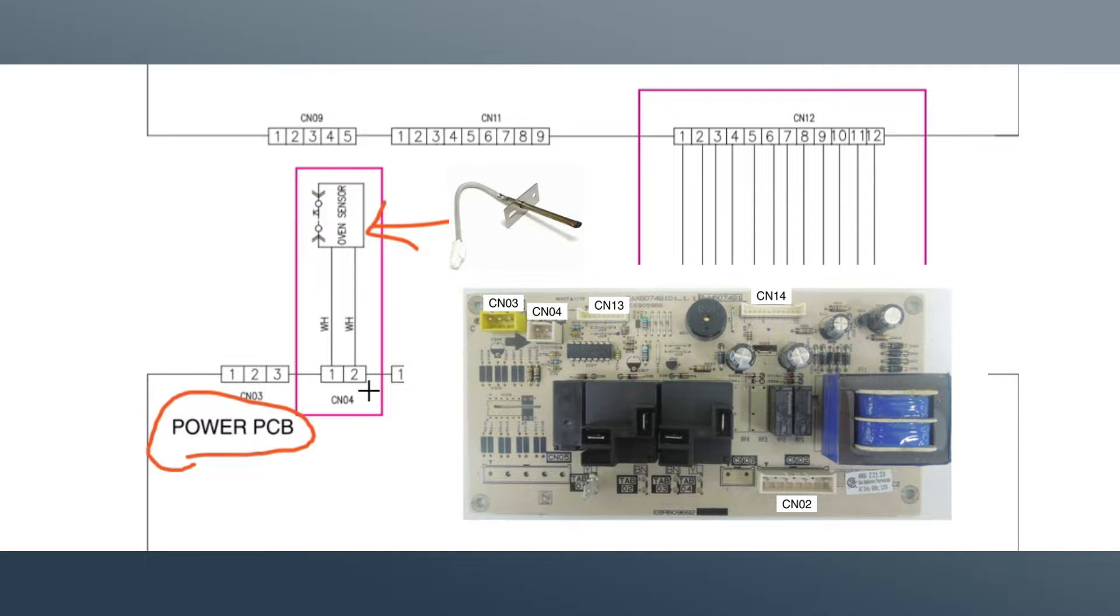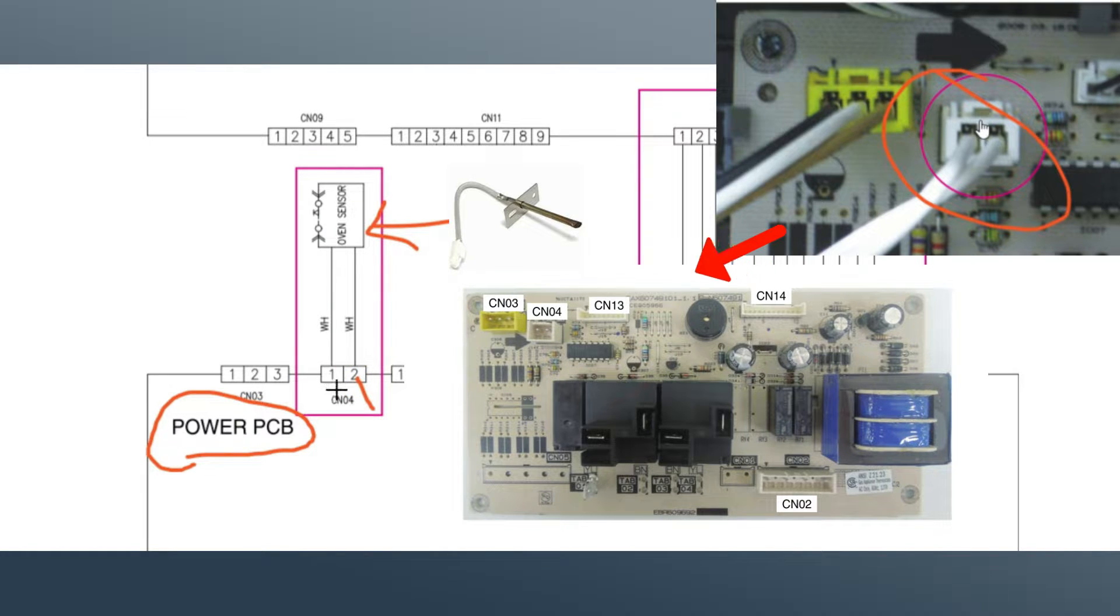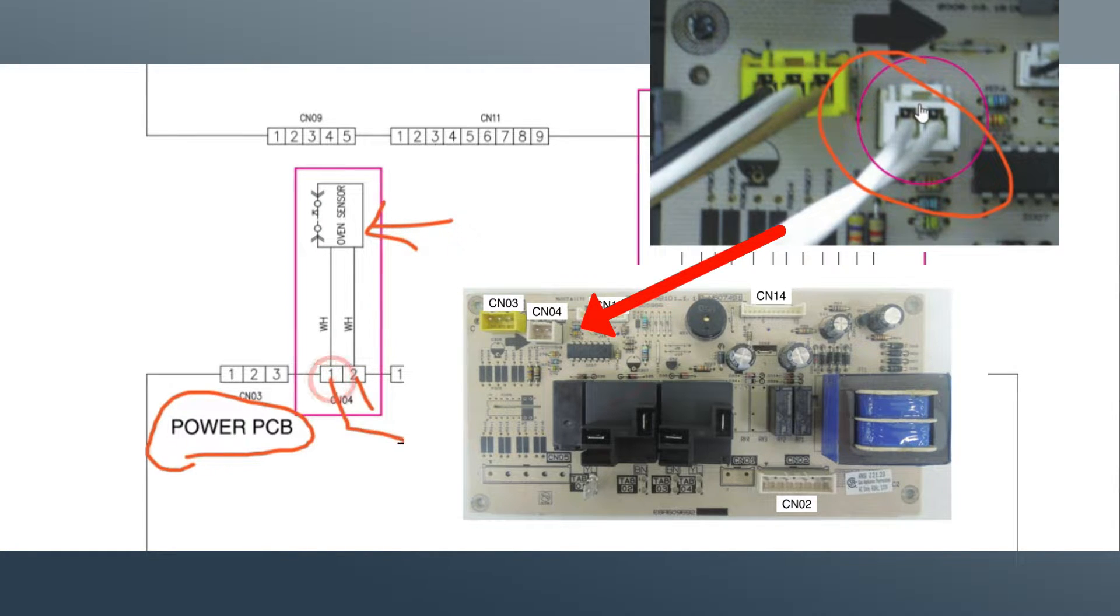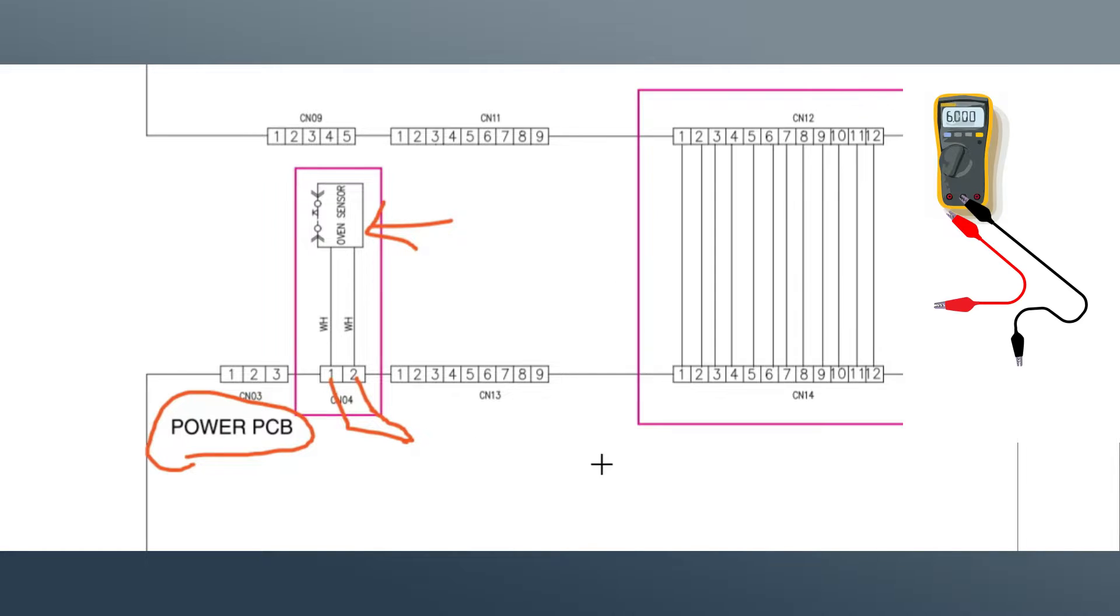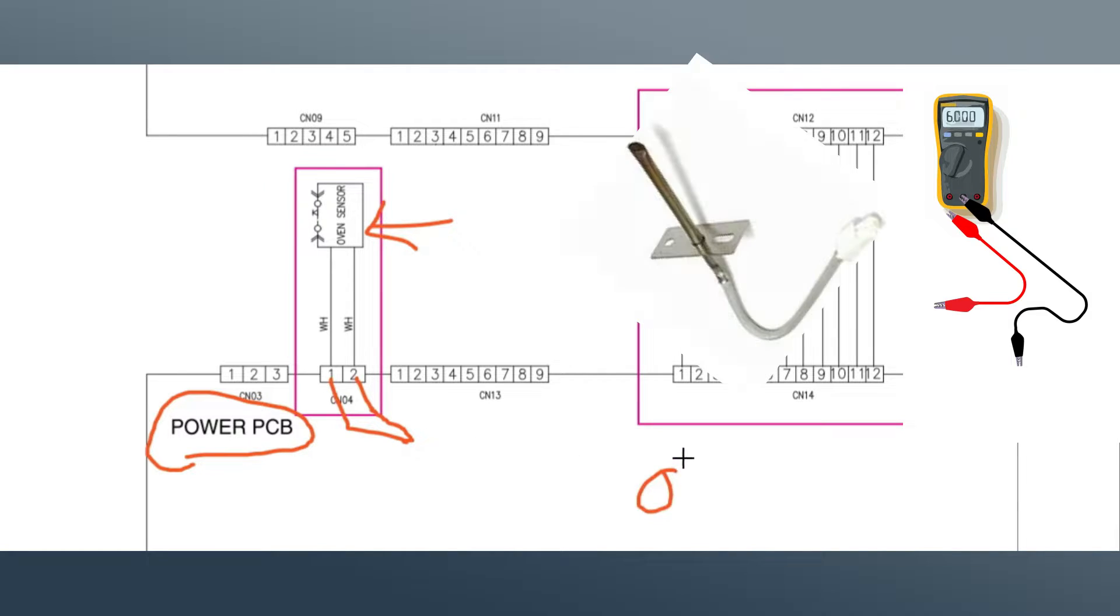So you'll unplug the unit and do this at your own risk. Unplug the unit, disconnect this from the main control board. It will be a harness. Later on here in the video, I'll show you what it looks like and where it's at. Disconnect it, you'll hook your multimeter up, turn your multimeter on ohms setting because we're checking resistance.